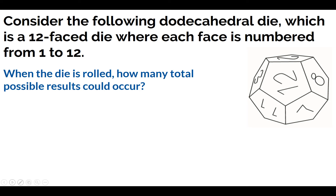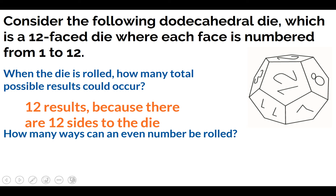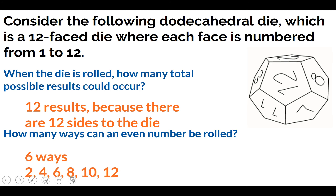First thing: we have a dodecahedral die, which is a dice with 12 sides. When it's rolled, how many possible results do we have? 12, right? The numbers 1 through 12 — there are 12 possible outcomes if I roll this dice. How many ways could an even number come out of it? Six different ways: 2, 4, 6, 8, 10, and 12. So there are six possible ways where I could get an even number. So 12 possible results, and if I want just even, it comes down to only six possible results.